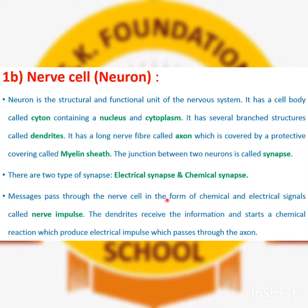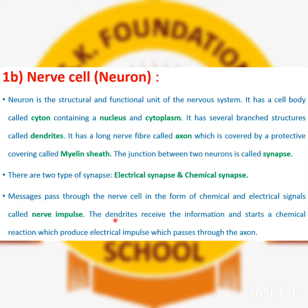Messages pass through nerve cells in the form of chemical and electrical signals called nerve impulses. In neurology, signals are written as impulses. When dendrites receive information, they produce a chemical reaction and this reaction passes through the axon. The signal travels from dendrites through the cell body and axon.